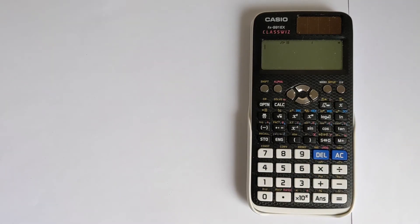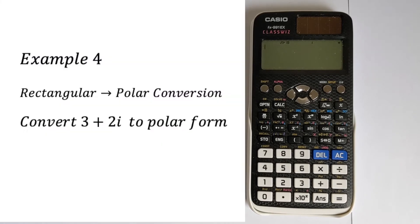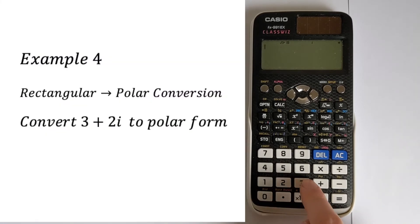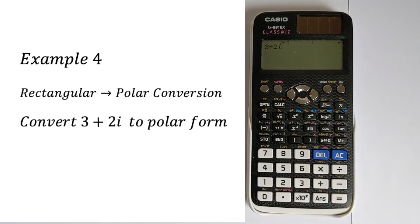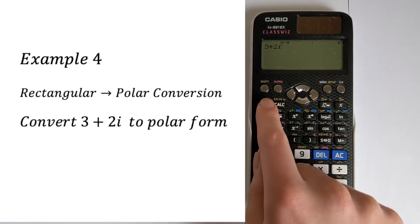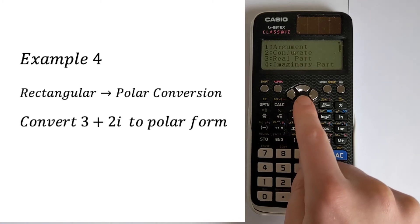The other really useful thing it can do is convert between rectangular and polar form. Say we wanted to take a number like 3 plus 2i and convert it to polar form. Just type in the number, press option, and then go down.